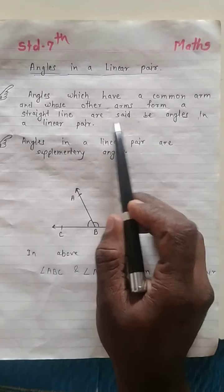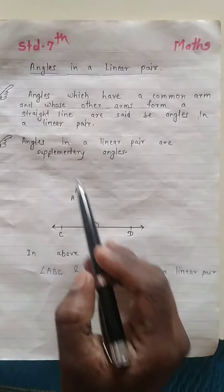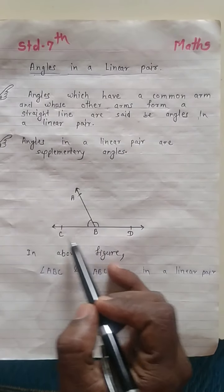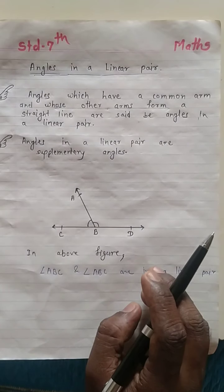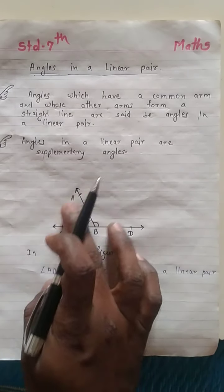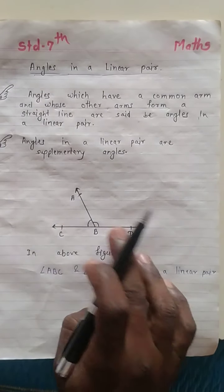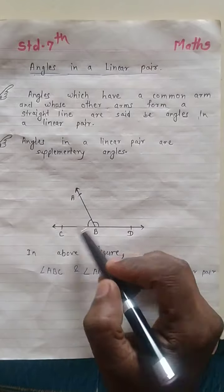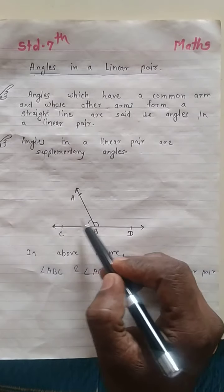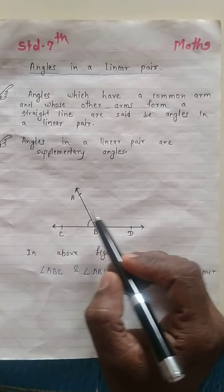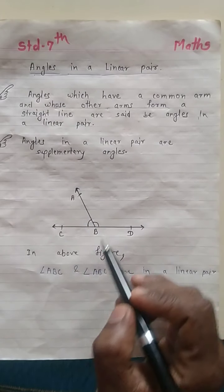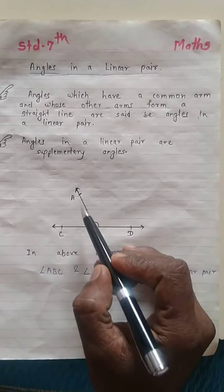They are said to be angles in a linear pair. This type of figure shows the same configuration, and these two angles form angles in a linear pair.